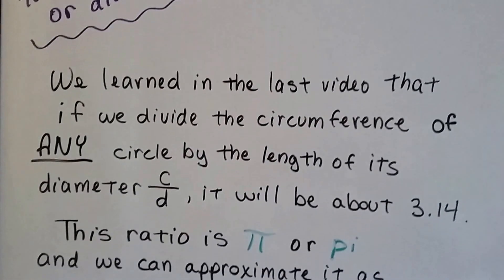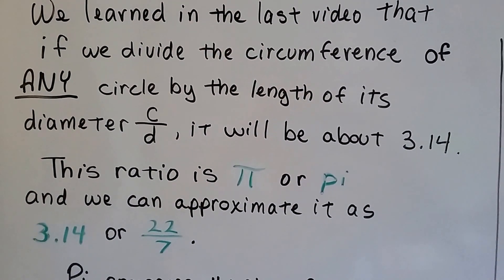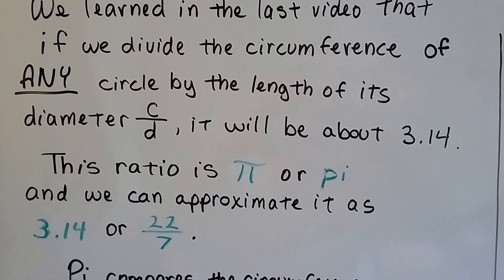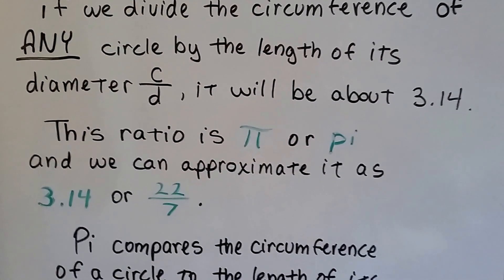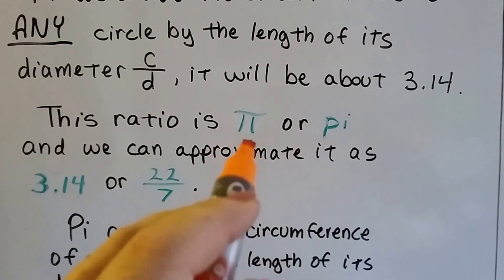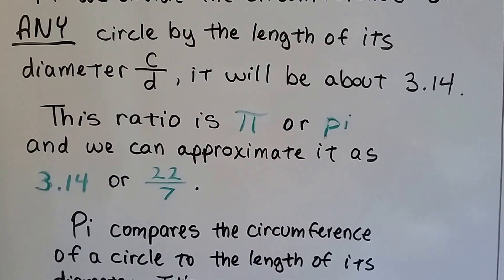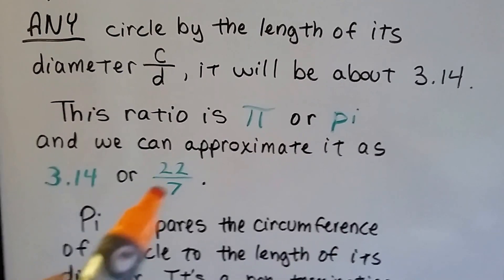We learned in the last video that if we divide the circumference of any circle by the length of its diameter, c over d, it'll be about 3.14. And this ratio is pi. It's the symbol right here, almost like a double t. And we can approximate it as 3.14, or as a fraction 22 over 7.